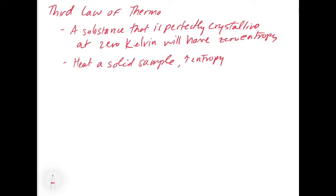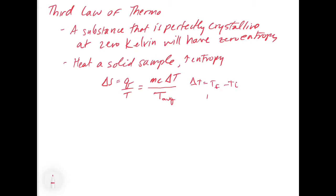This allows us to say, for example, that if we heat a solid sample, we know that heating should increase entropy, because when we go from zero kelvin to anything greater the atoms start moving in less predictable ways. We can use the equation delta S equals q over T, where the heat transferred is mc delta T, and the temperature is T average. If delta T equals T final minus T initial, then T average equals T final plus T initial divided by two. So heating from 0°C to 100°C gives a delta T of 100°C and a T average of 50°C.